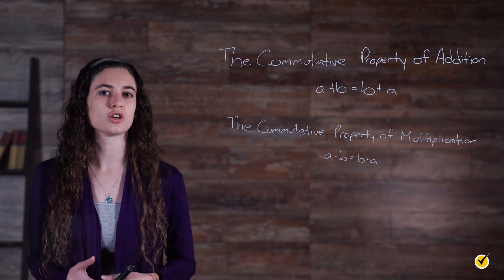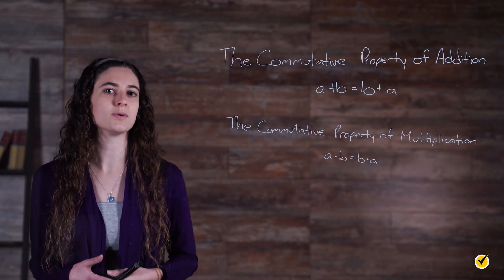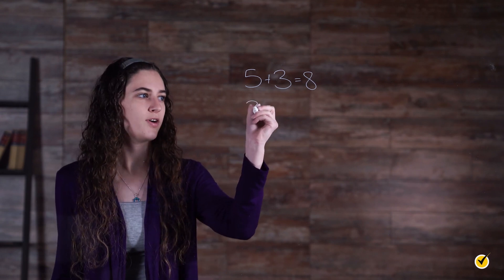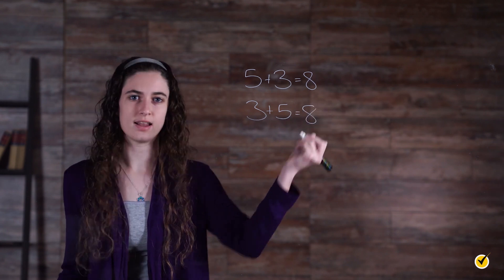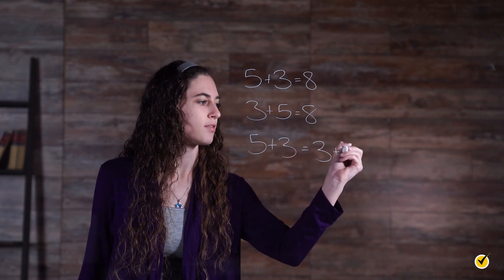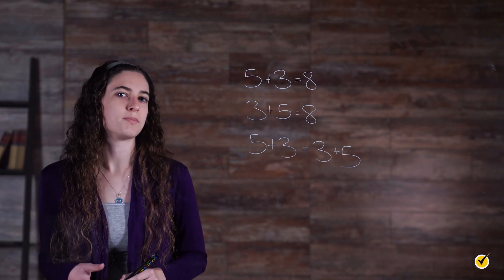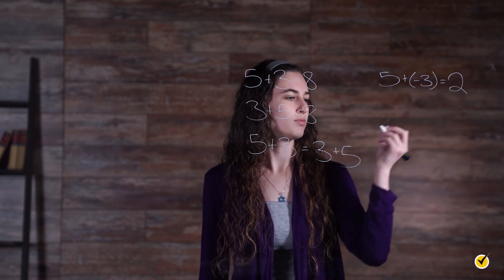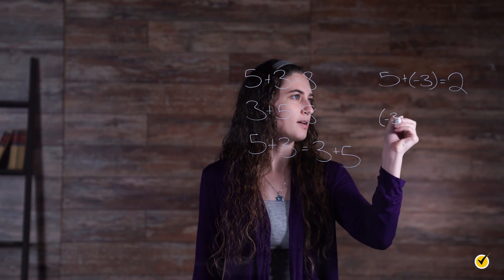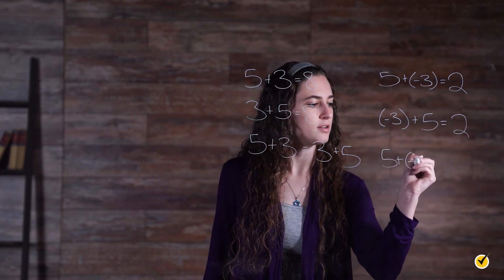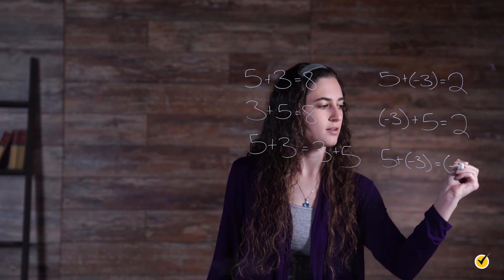To prove that moving or rearranging terms is acceptable, let's look at a few examples of the commutative property being used in addition problems. If we add 5 plus 3, we get 8. But if we switch our terms and make it 3 plus 5, we still get 8. So 5 plus 3 is equal to 3 plus 5. Let's alter one of our terms: 5 plus negative 3 equals 2, and negative 3 plus 5 still equals 2. So 5 plus negative 3 equals negative 3 plus 5.